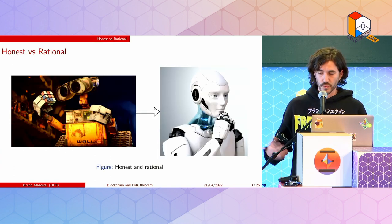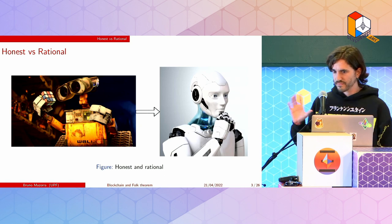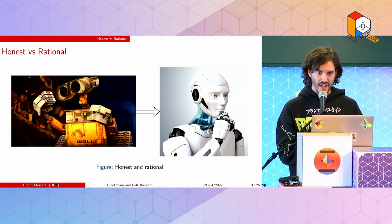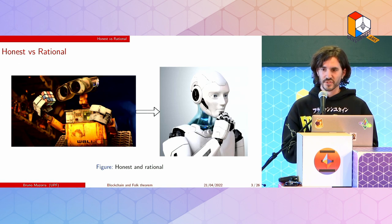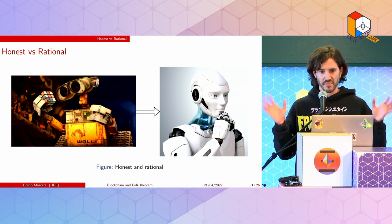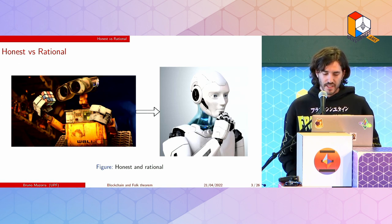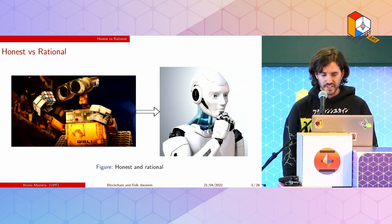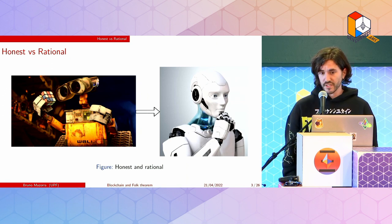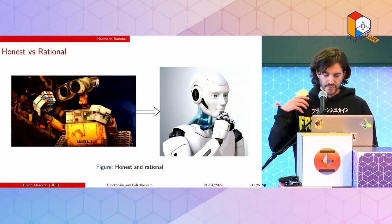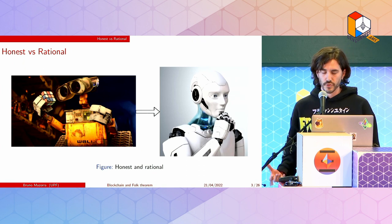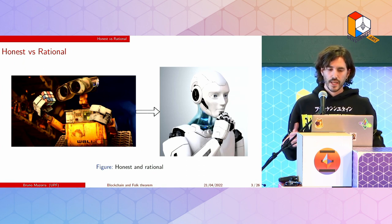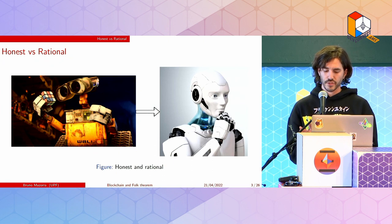In distributed systems in general you assume that some nodes are Byzantine and some others are honest — you give some instructions and they do it. However, in blockchain technology where you have incentives, I think we should not assume that the players are honest. Players are rational and they have a lot of freedom of action to take actions and increase their own revenue.